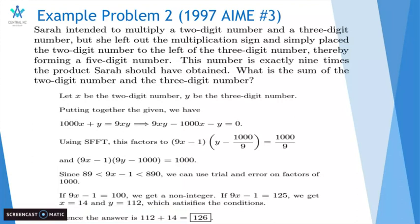Putting the variables on one side, we get 9xy minus 1000x minus y equals 0. Using Simon's favorite factoring trick, this factors to 9x minus 1 times y minus 1000 over 9, which equals 1000 over 9. This is the case because there's a coefficient on the xy term 9, and we're putting the coefficient on the x term when factoring. So we divide the y term by 9, and we put it with the y to get our factors.